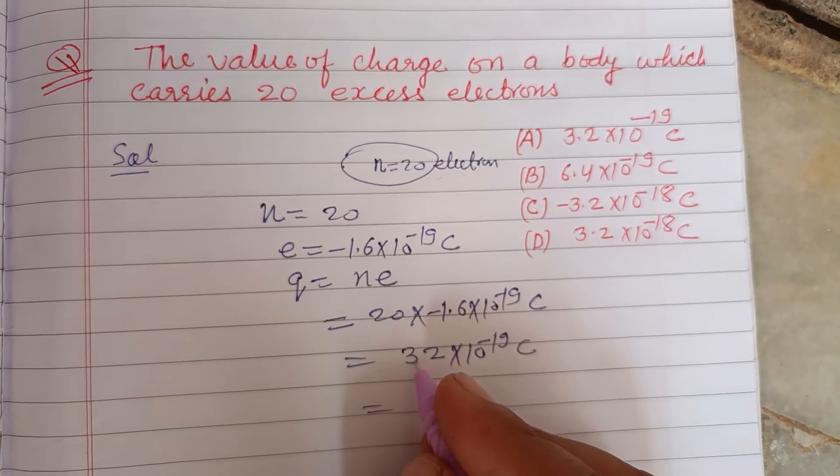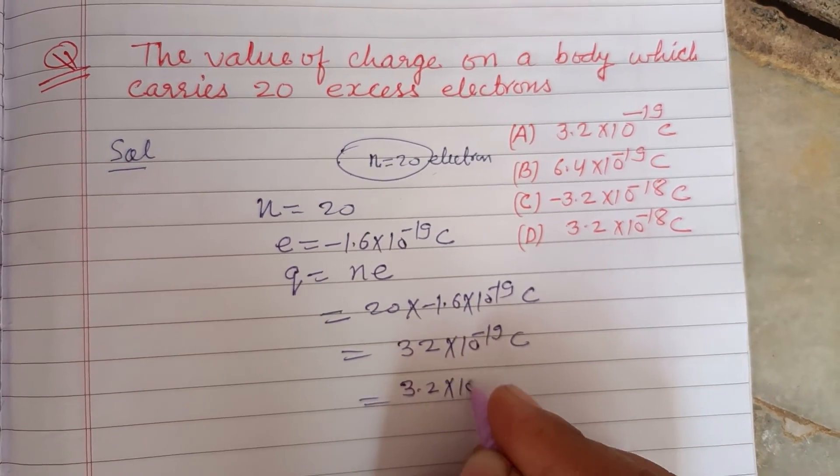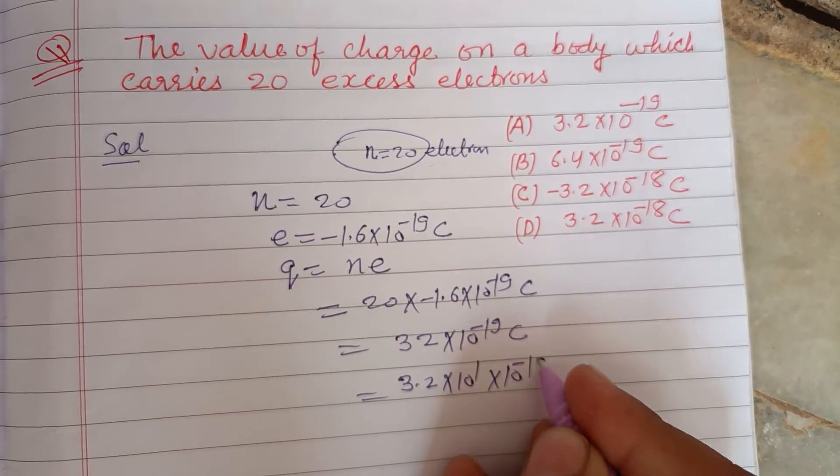And we can write 32 as 3.2 times 10 to the power 1 times 10 to the power minus 19 coulombs.